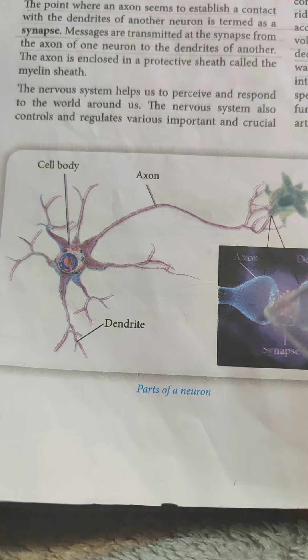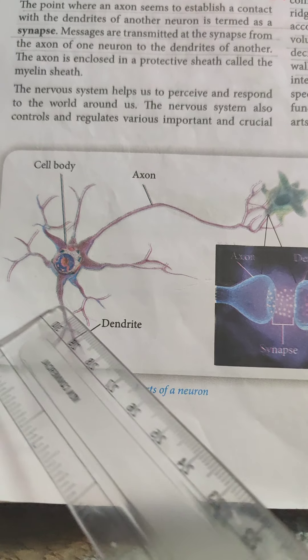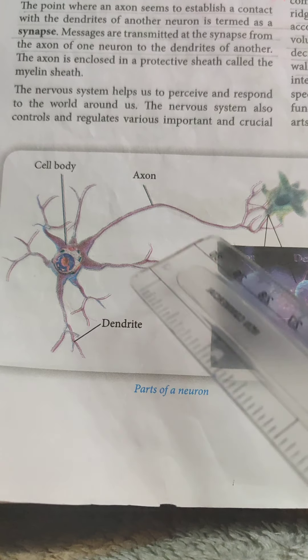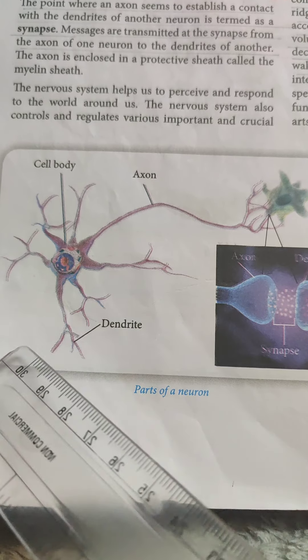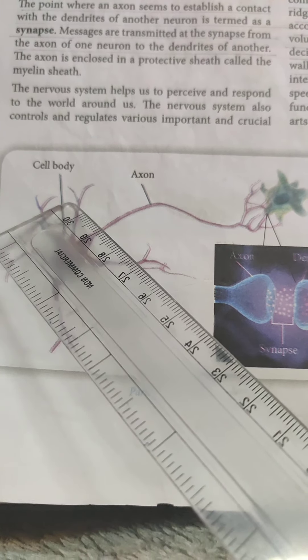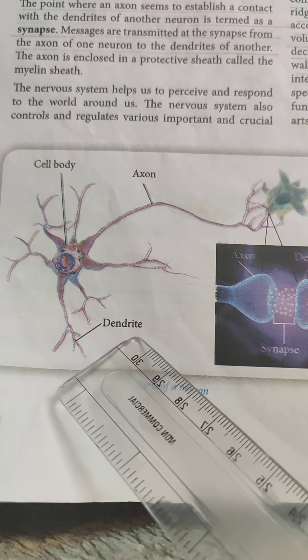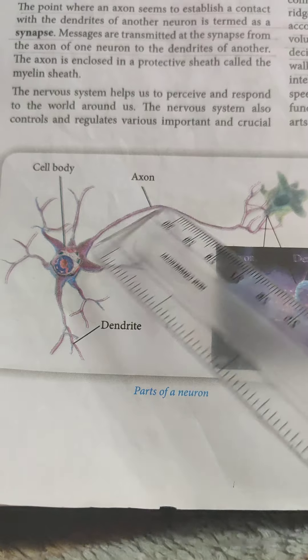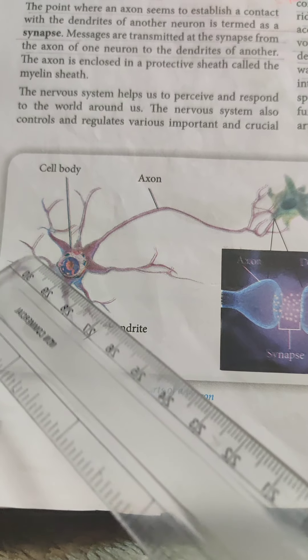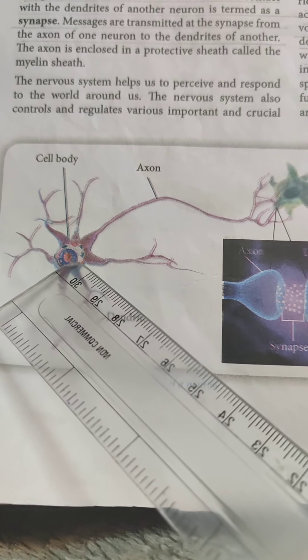This is the structure of a neuron. Each neuron consists of a cell body, dendrites, and axon. I will tell you about these parts.